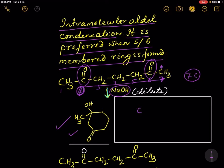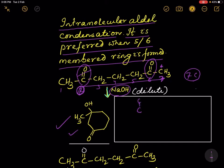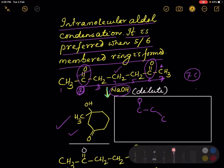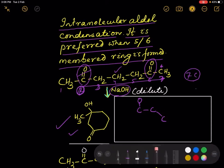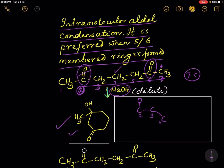The double bond is written as single bond O. Then number 3 carbon is written next to number 2, number 4 is written next — this is 2, this is 3, 4 — then the 5th carbon is written, and the double bond C=O is written in this fashion.